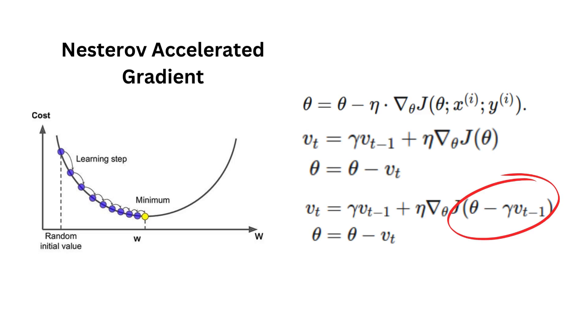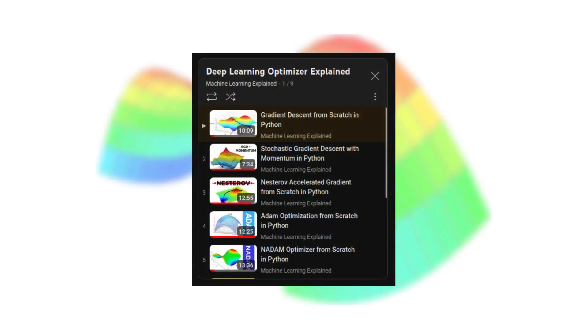You can modify this still a bit more to have a momentum algorithm that can kind of look ahead while it's rolling and do a correction. This is called Nesterov accelerated gradient. If you're interested by this algorithm, do check out my playlist on the subject.